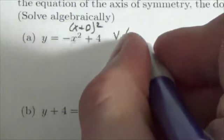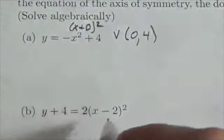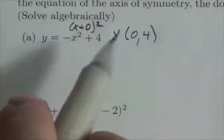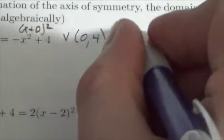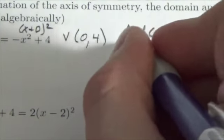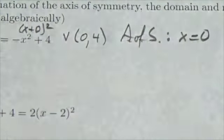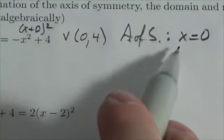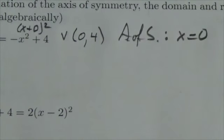So the vertex is going to be the point (0, 4). Now, as soon as you know that the vertex is (0, 4), we also know that the axis of symmetry is going to be x equals 0. Don't forget to write it as x equals 0 because it's an equation.